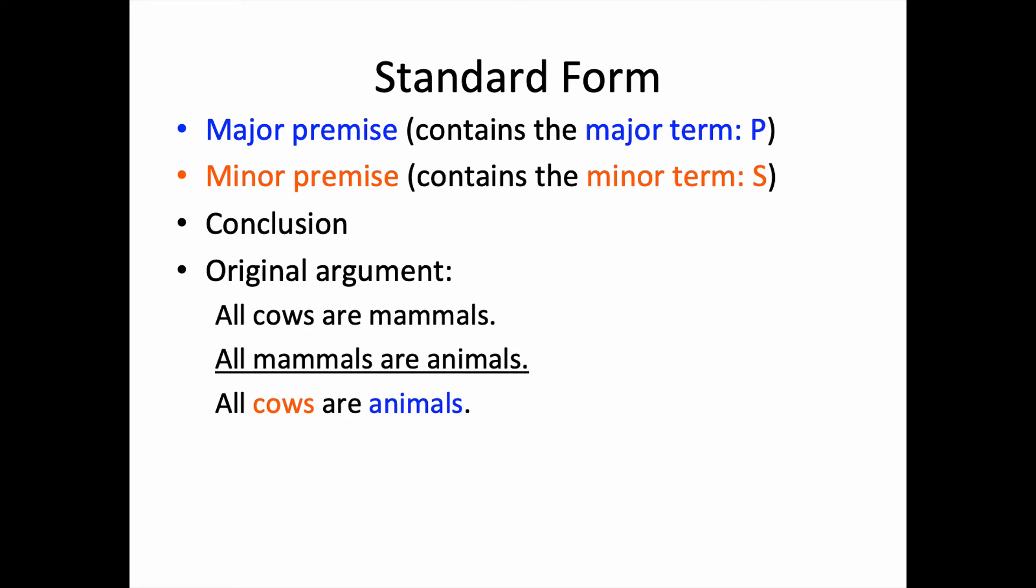So that the standard form for the argument we just saw is: all mammals are animals, all cows are mammals, and so all cows are animals. The S and the P stand for respectively the minor and the major terms, and the M stands for the middle term.